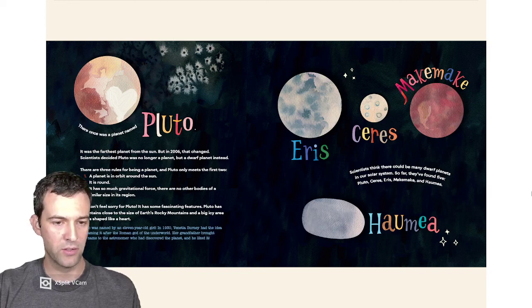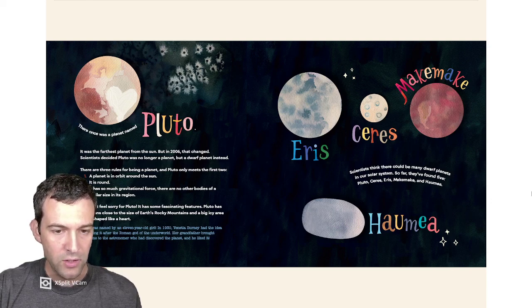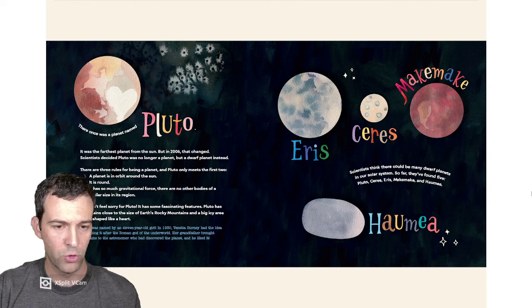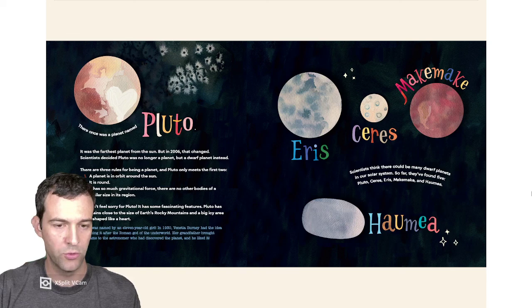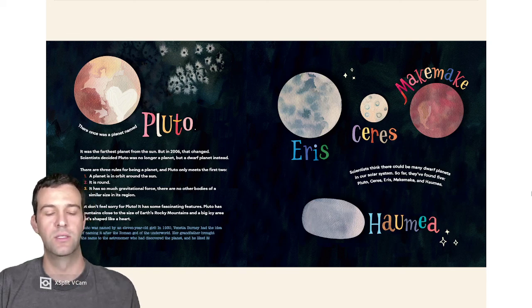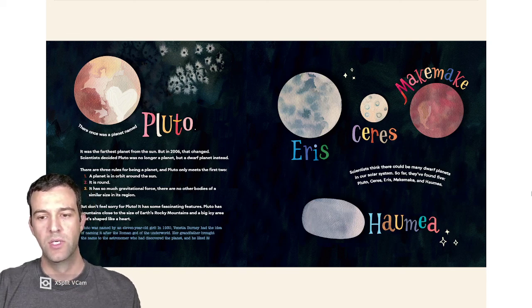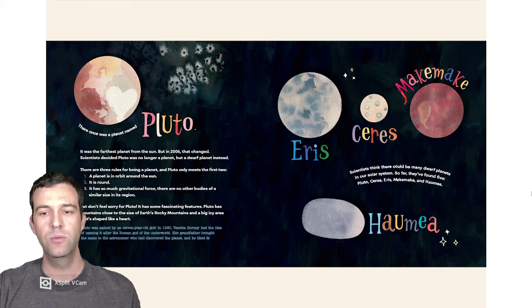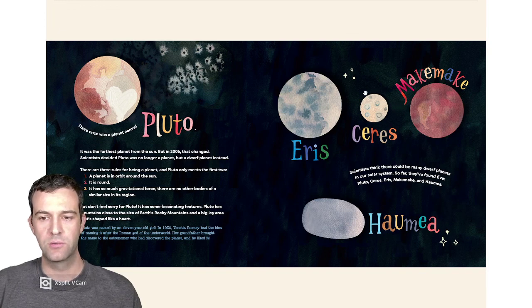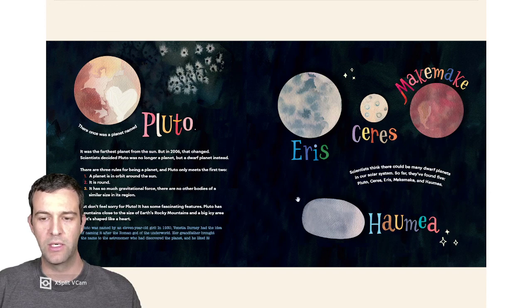Pluto was named by an 11-year-old girl. In 1930, Venetia Burney had the idea of naming it after the Roman god of the underworld. Her grandfather brought the name to the astronomer who discovered the planet, and he liked it. Scientists think there could be many dwarf planets in our solar system. So far, they've found five: Pluto, Ceres, Eris, Makemake, and Haumea.